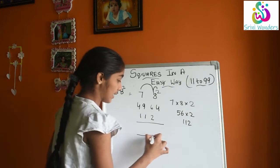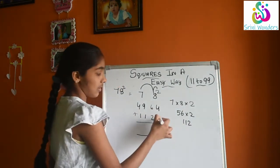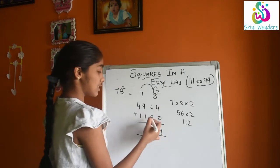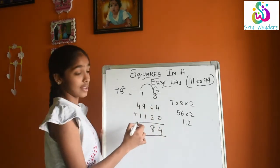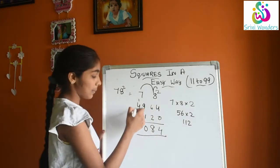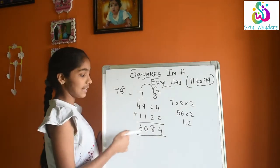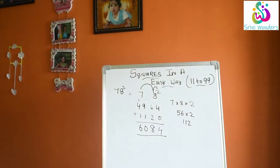Now what we will get if we will add? If here nothing will be 0, 4. 6 plus 2 is 8. 9 plus 1 is 10, 0 here, 1 here. 1 plus 4 is 5, 5 plus 1 is 6. 6084. 78 square is 6084.